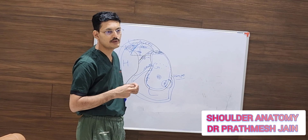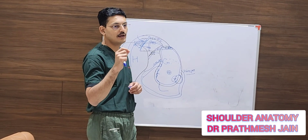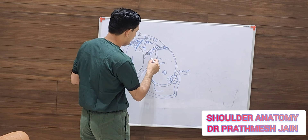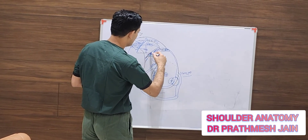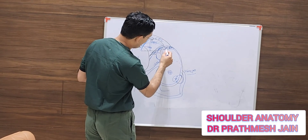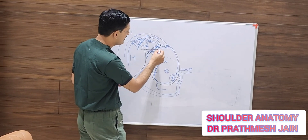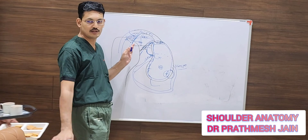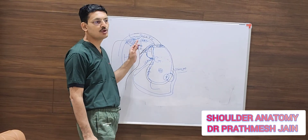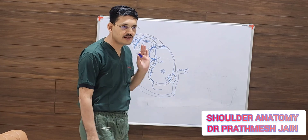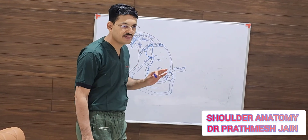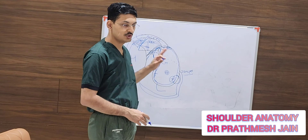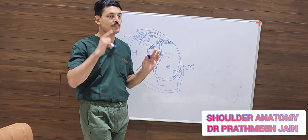The Buford complex is an important normal anatomical variant in which you have a thickened MGHL and absence of the labrum in that area. Normally the labrum is present 360 degrees, but in this area the labrum is absent — it looks like a tear but it is not. Buford complex and sublabral foramen are normal anatomical variations; they are not tears and you should not repair them, as repairing them will make the shoulder too tight.